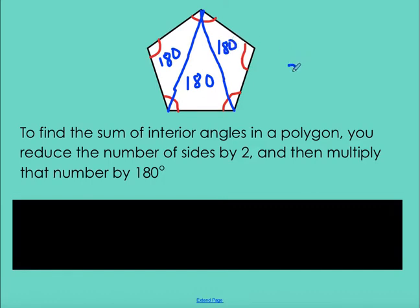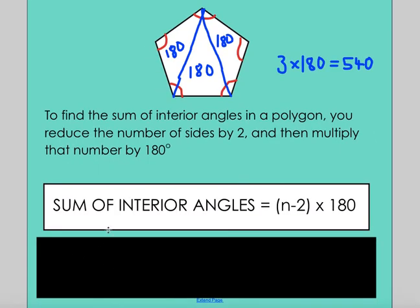So that would be three multiplied by 180, which would give us our sum of interior angles, which is 540 in this case. Now this rule or relationship that's written here as a sentence can be written more concisely as a formula, and that formula is here. So the sum of interior angles is n minus 2 multiplied by 180, where n stands for the number of sides in that polygon.